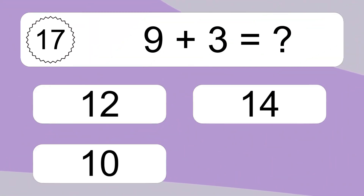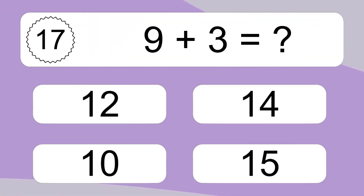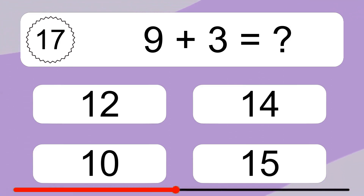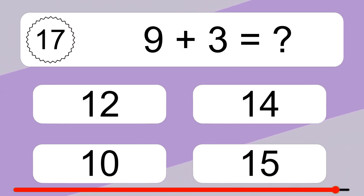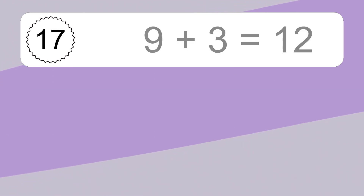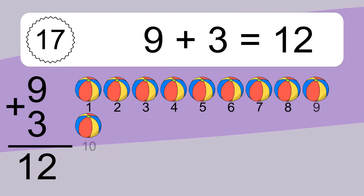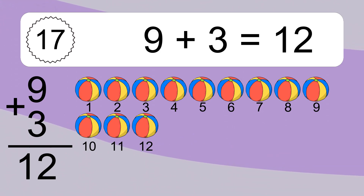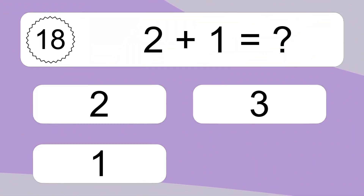9 plus 3 equals what? 9 plus 3 equals 12. Let's count it: 1, 2, 3, 4, 5, 6, 7, 8, 9, 10, 11, 12.